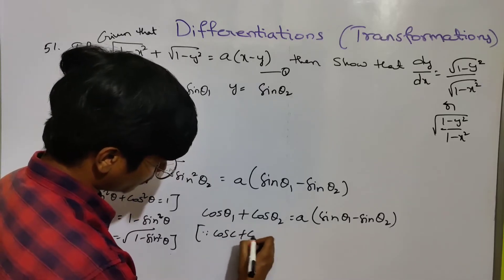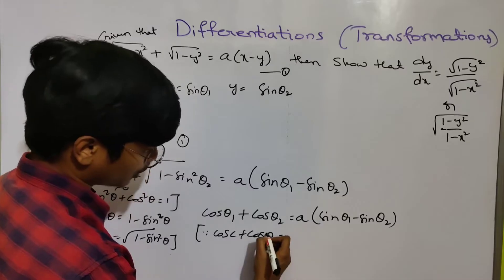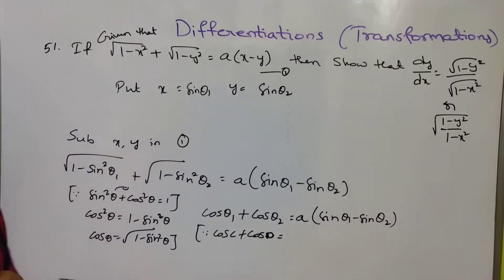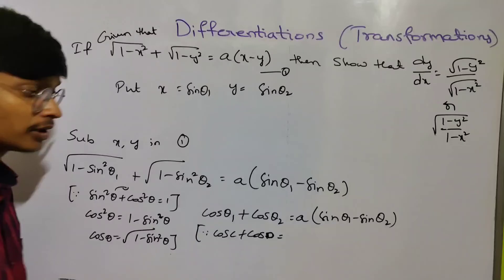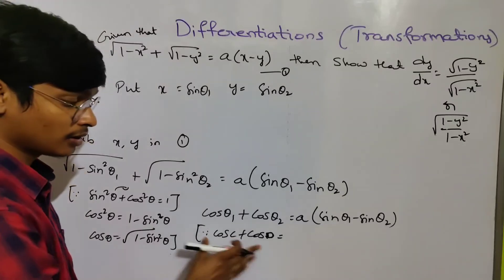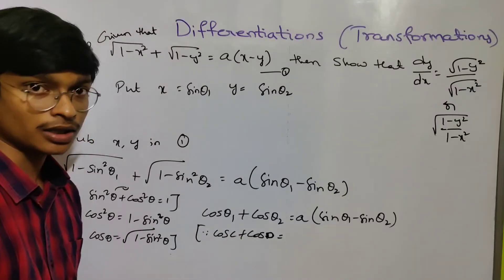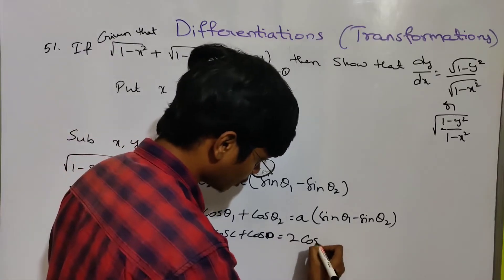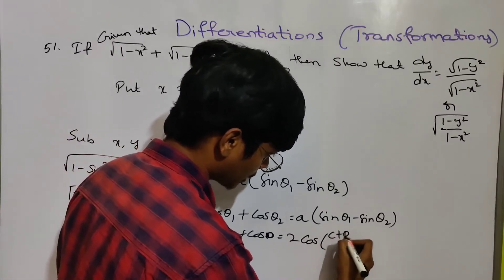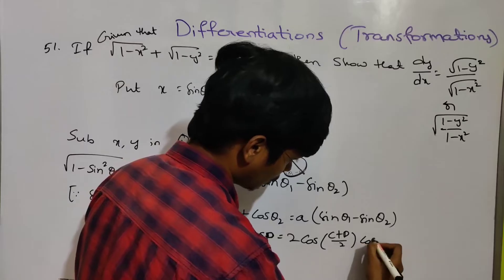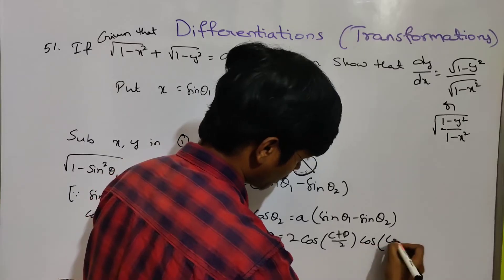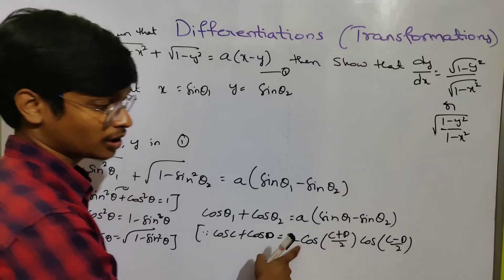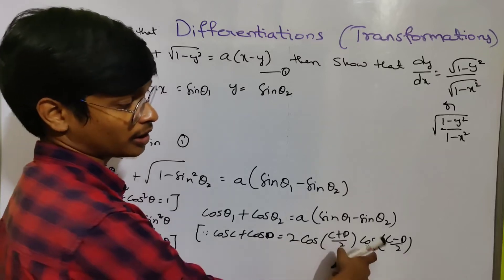This is cos C + cos D, which is the transformation formula. This is the shortcut. We have 2 cos((C+D)/2) · cos((C-D)/2). So all terms should be cos only: 2 cos((C+D)/2) · cos((C-D)/2).